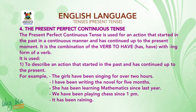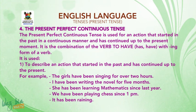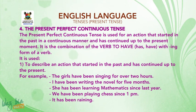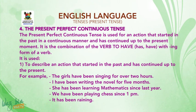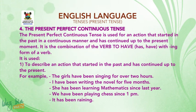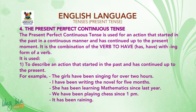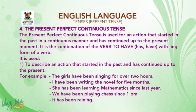Now let's go to the last type: the present perfect continuous tense. It is used for an action that started in the past in a continuous manner and has continued up to the present moment. It is the combination of the verb 'to have' with 'being' and the -ing form of a verb. Remember: immediately after 'have' or 'has,' it must be followed by 'been' before adding the -ing form of the verb.